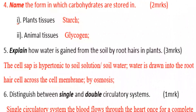Carbohydrates are stored in plant tissues as starch and in animal tissues as glycogen. Number five: explain how water is gained from the soil by root hair in plants.